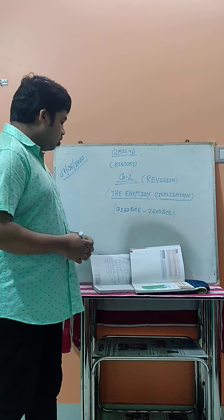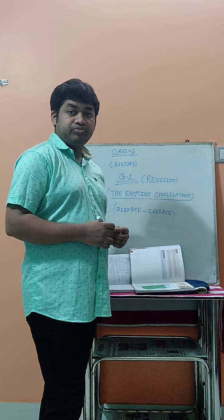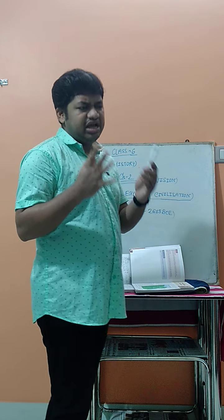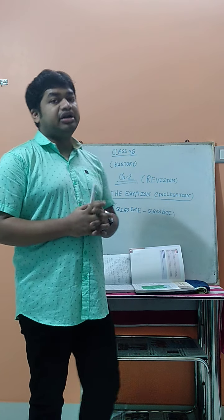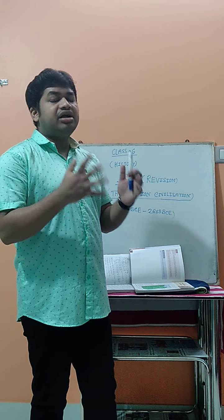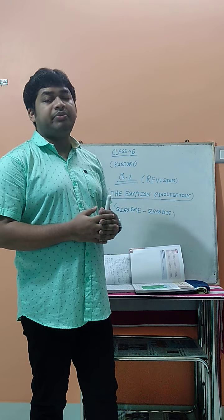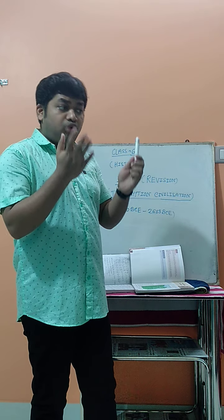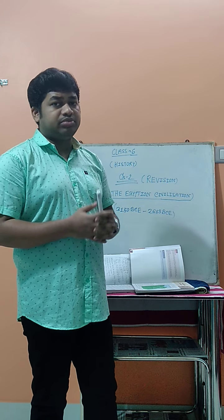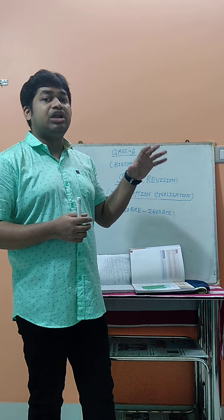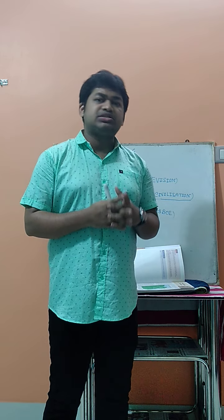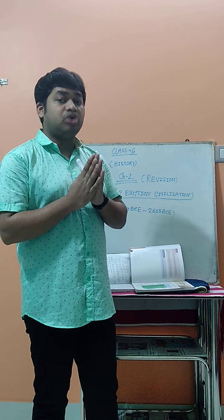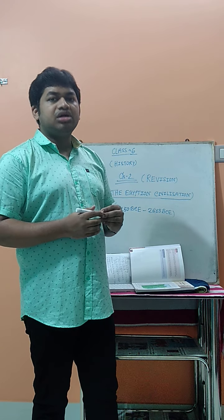The next important question is: why is Egypt also known as the Gift of the Nile? Because Egypt is an area where the temperature throughout the year is very harsh and very high. Rainfall occurs in very small amounts. Every year the river Nile floods, and the floodwater spreads to both sides of the river bank, depositing silt and alluvium soil, creating fertile land masses very helpful for agriculture. That is why Egypt is also known as the Gift of the Nile.